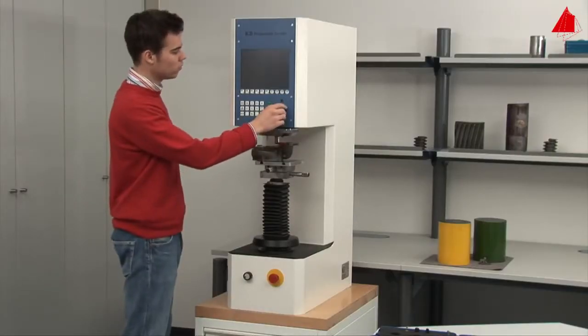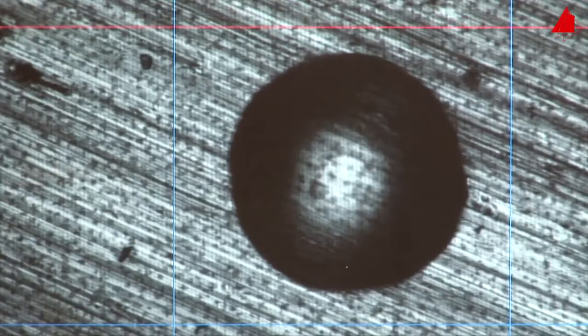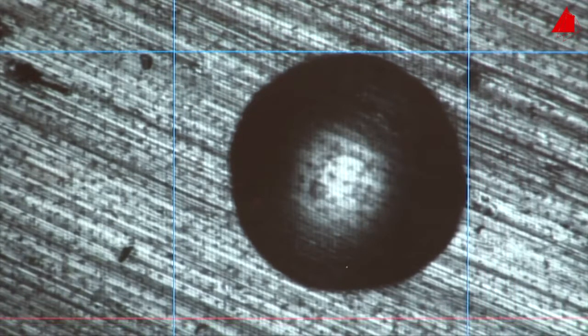The indentation can now clearly be seen on the monitor. With the control knob, the tester places four measuring lines on the edges of the indentation to measure its diameter.